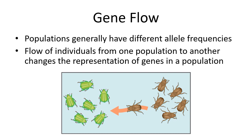Gene flow is what we described with those birds and beetles — different populations have different makeups of traits and genes. If one or a few individuals migrate from one population to another, that's gene flow. It causes a change in the diversity and abundance of those traits — for example, if a brown beetle goes into a green beetle population, now you have some brown genes in the population.